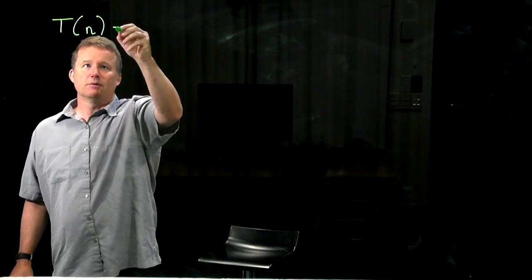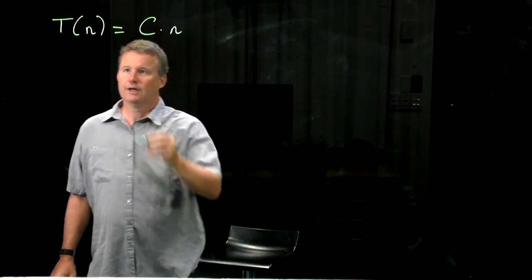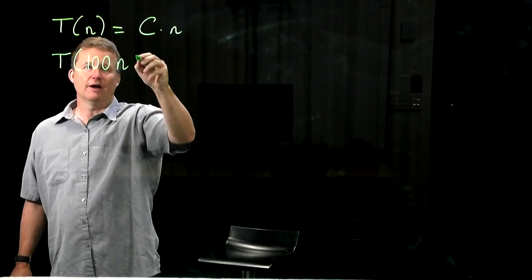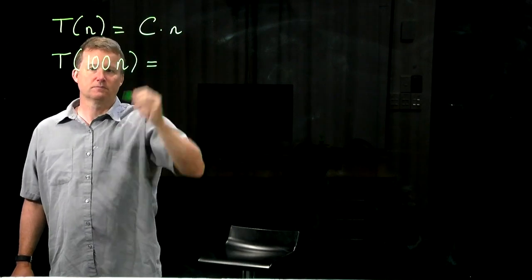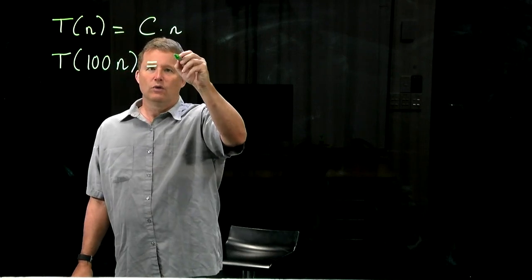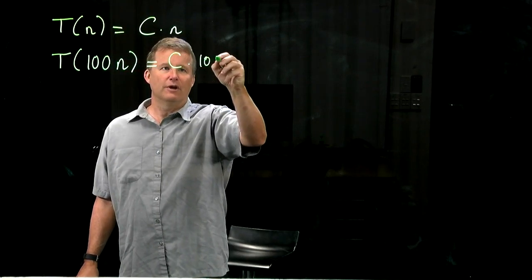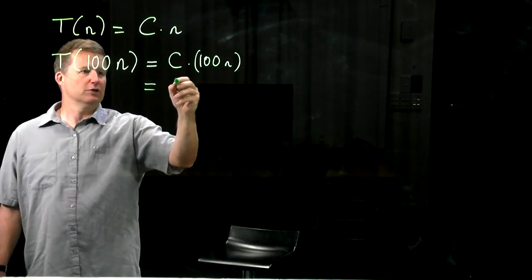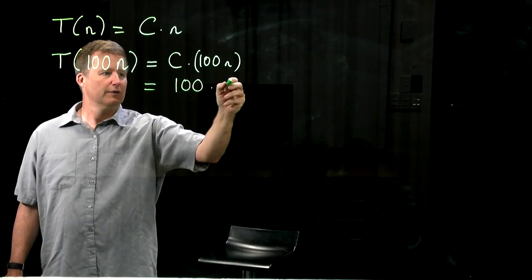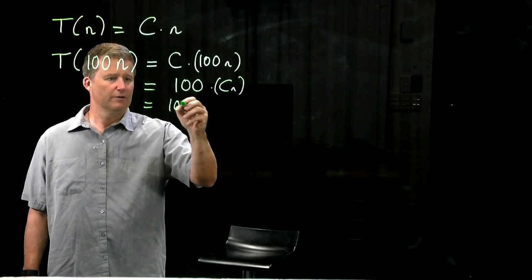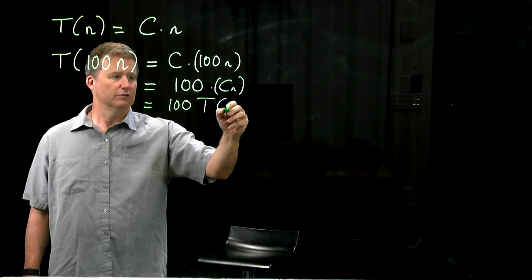If the running time is some constant times n, and then we feed in an input which is, let's say, 100 times larger, nothing special about the number 100 here, we're going to get a running time of c times 100 n. That's of course equal to 100 times c n, and that's 100 times the original running time.